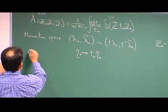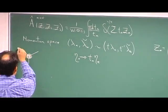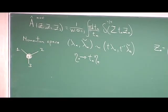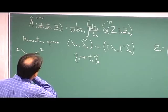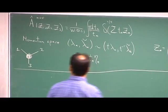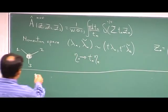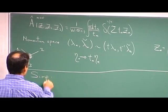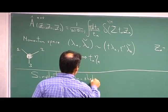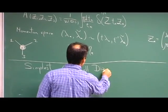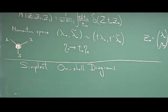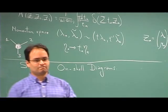We decided by definition that these amplitudes are denoted by a black vertex. Now we can start to have some fun with these diagrams.